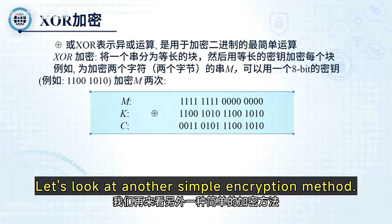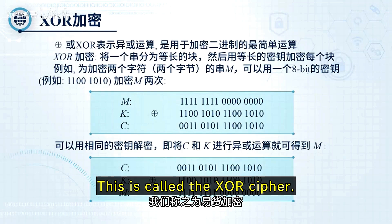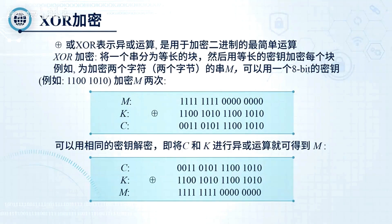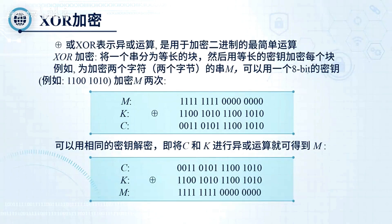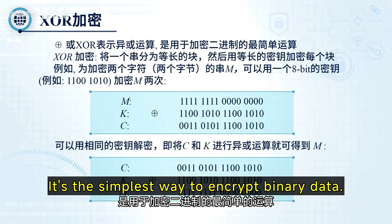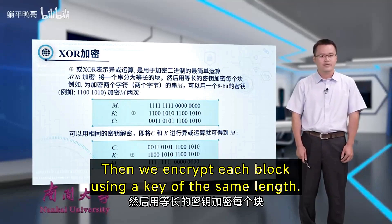Let's look at another simple encryption method called the XOR cipher. XOR stands for the exclusive-OR operation. It's the simplest way to encrypt binary data. In XOR encryption, we first split the data into blocks of equal length, then we encrypt each block using a key of the same length.